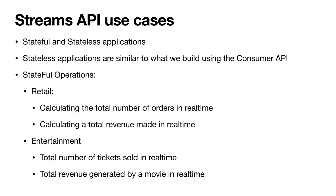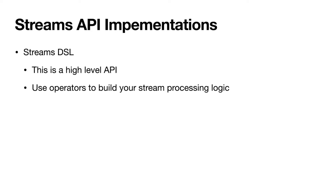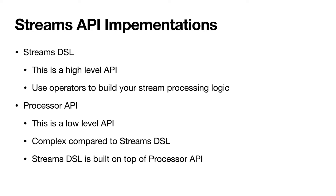Now let's cover the options available when it comes to implementation using the Kafka Streams API. We have two different options: number one is the Streams DSL approach. This is a high-level API and it has predefined operators available to build your streaming logic — operators like map, flat map, and many others that we will explore in future parts of the course. The second option is the Processor API. This is a low-level API and may not be intuitive to work with compared to Streams DSL, making it more complex. It's worth noting that the Streams DSL is actually built on top of the Processor API. In this course, we are specifically going to explore the Streams DSL, because pretty much all types of applications you want to build using Kafka Streams API can be built using Streams DSL.